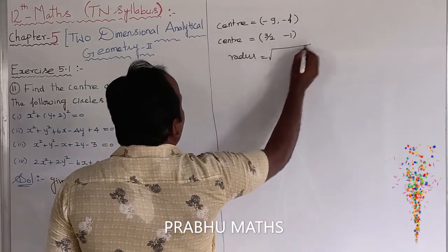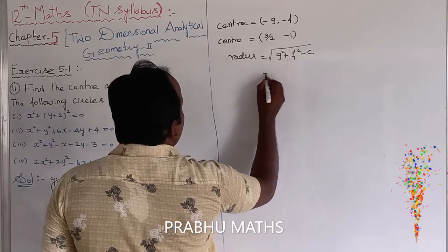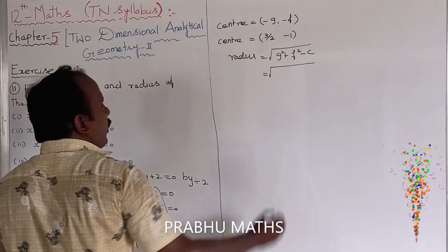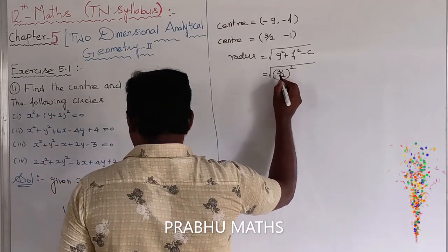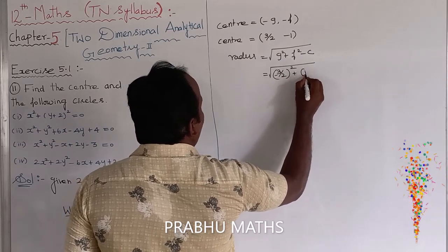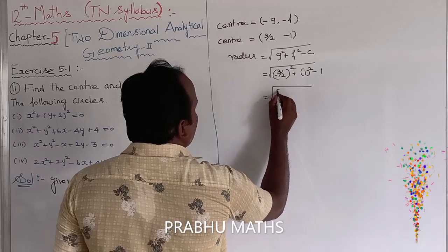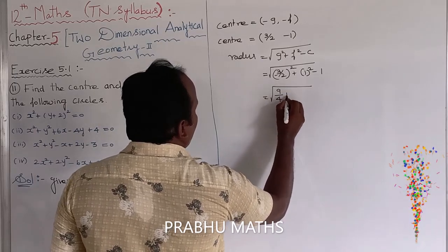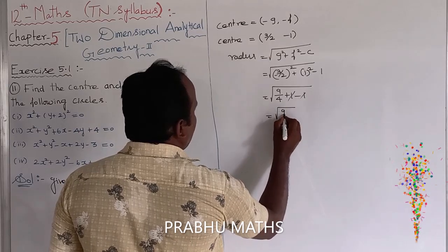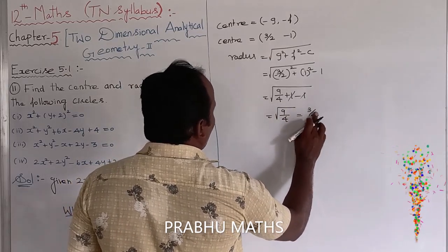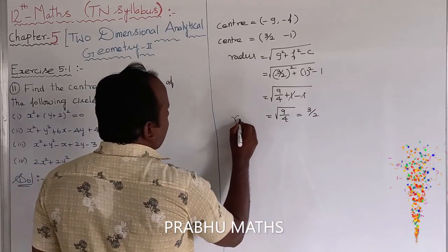Next, the radius equals the square root of g squared plus f squared minus c. That is the square root of (3 by 2) squared plus (1) squared minus 1, which equals the square root of 9 by 4 plus 1 minus 1. The plus 1 and minus 1 cancel, leaving the square root of 9 by 4, which equals 3 by 2.